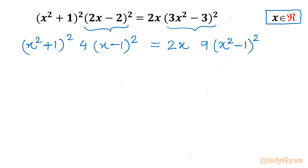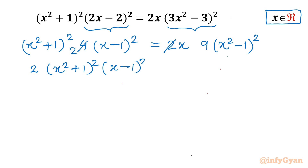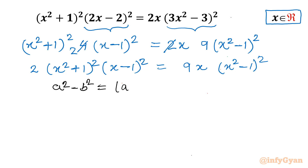Now I will cancel 2 and 4, writing 2 over there. So the equation becomes 2(x² + 1)²(x - 1)² = 9x(x² - 1)². Now I will use one algebraic identity — the difference of two squares: a² - b² = (a + b)(a - b).